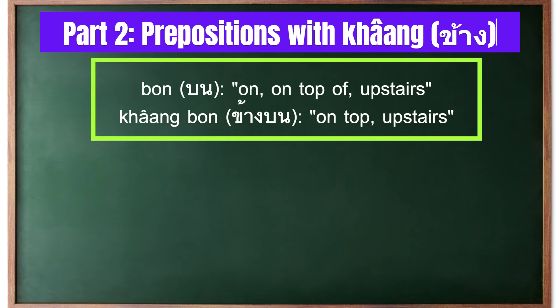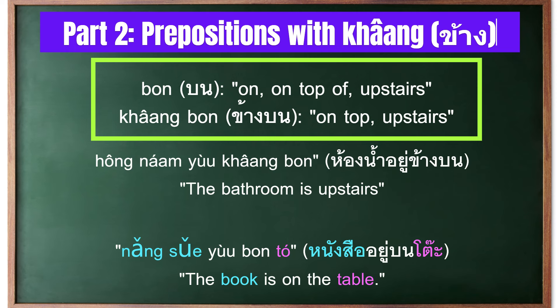The next preposition is บน, meaning 'on', 'on top of', or 'upstairs'. ข้างบน means 'on top' or 'upstairs'. For example, 'the bathroom is upstairs' is ห้องน้ำอยู่ข้างบน. 'The book is on the table' uses บน to indicate the book is resting on the surface of the table.